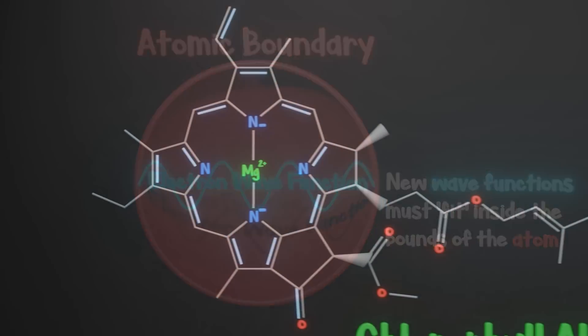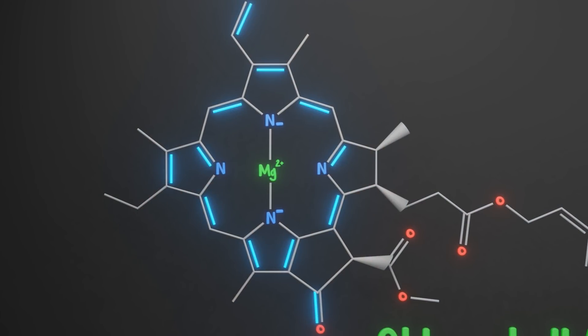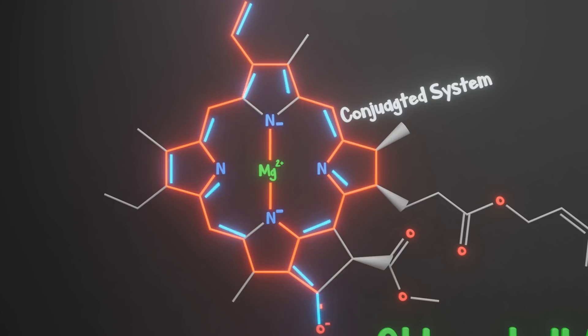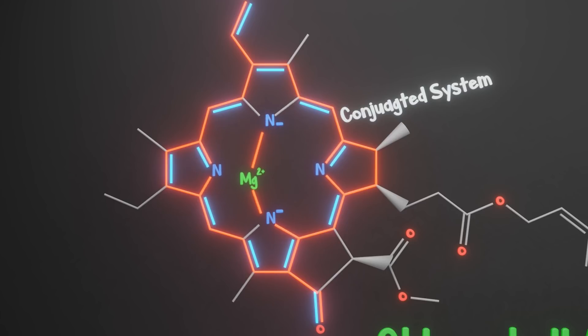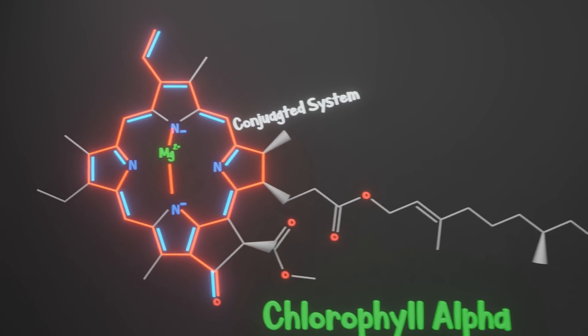But this alternating double and single bond pattern throughout chlorophyll's ring creates a conjugated system, which is a fancy way of saying there are more energy states than meets the eye. You can rearrange these double bonds in multiple different ways, creating multiple different opportunities for an electron to absorb a photon. Add in the magnesium atom and its influence on the energy states in each bond, and you are ripe for photon interaction.